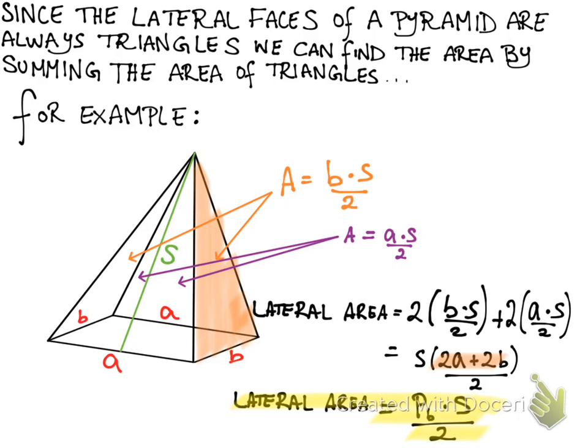B times S divided by 2 plus A times S divided by 2, and there's twice that, so we just multiply by 2. Another easy formula is to say, well okay, I can just take the perimeter of the base, PB, times the slant height divided by 2, which is the formula I've highlighted in yellow.